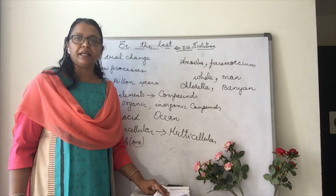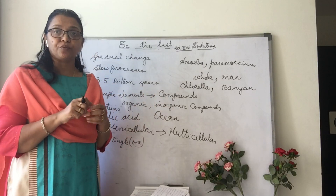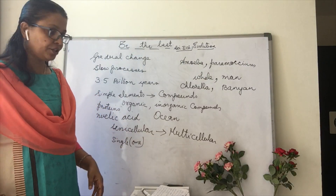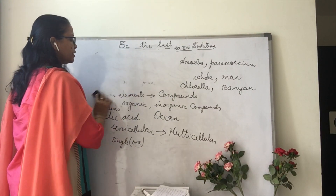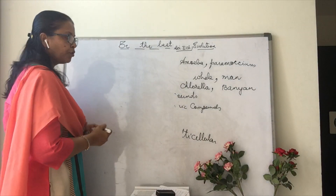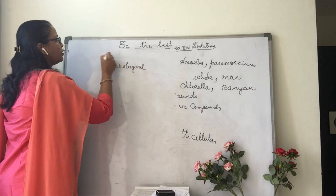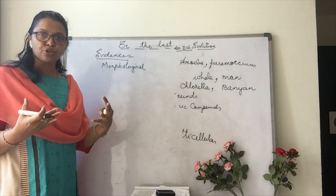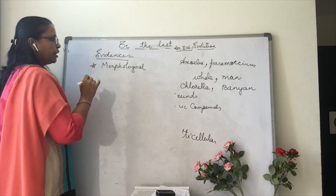If evolution has taken place, we do not simply believe it without evidence. There has to be some evidences. So let us talk about these evidences that exist today which help us believe that this evolution has happened — evidences which help us know that evolution has taken place.